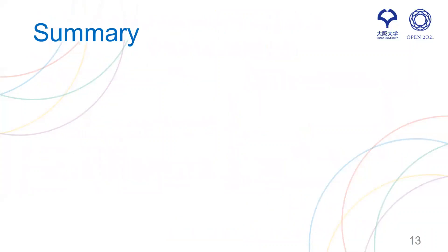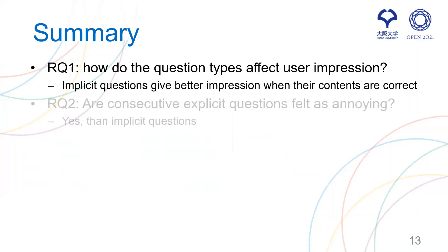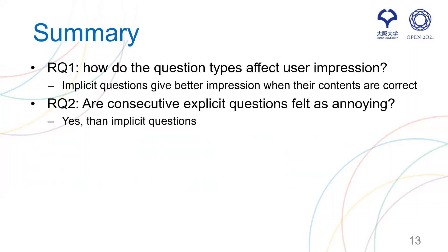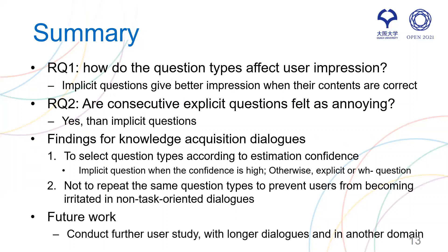Let me summarize. As to the first research question, implicit questions give better impression when their contents are correct. As to the second research question, yes — consecutive explicit questions are felt as more annoying than implicit questions. A key finding is that dialogue systems should select implicit questions when estimation confidence is high, and otherwise select explicit or WH questions. Another finding is not to repeat the same question types, to prevent users from becoming irritated, especially in non-task-oriented dialogues. As future work, we need to conduct a further user study with longer dialogues and in another domain. Thank you for your kind attention.